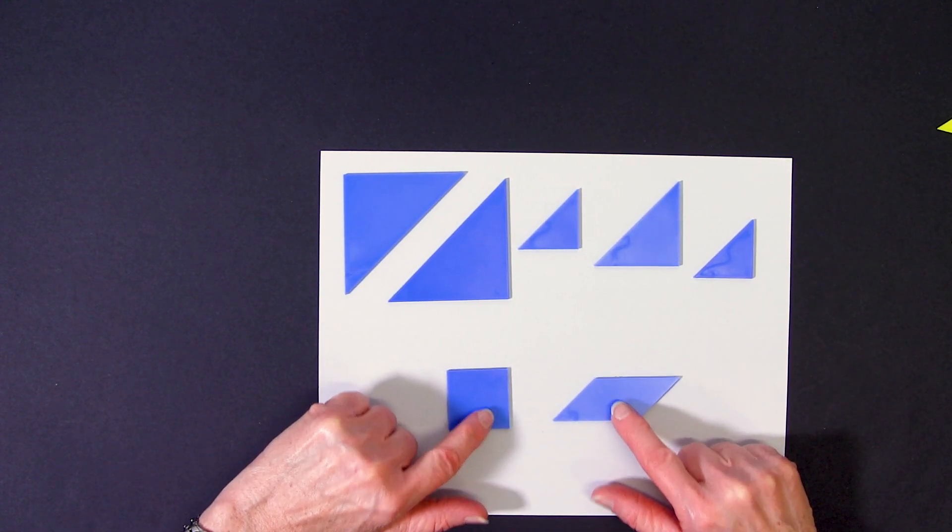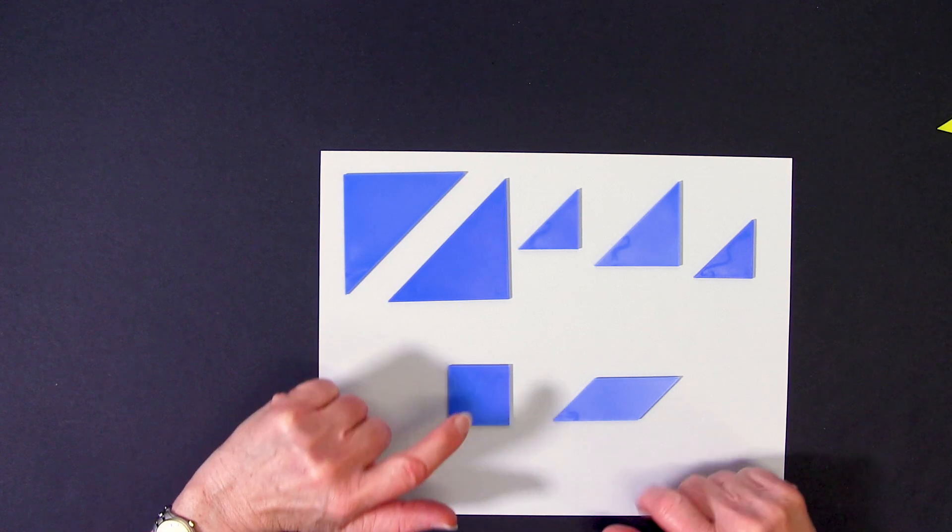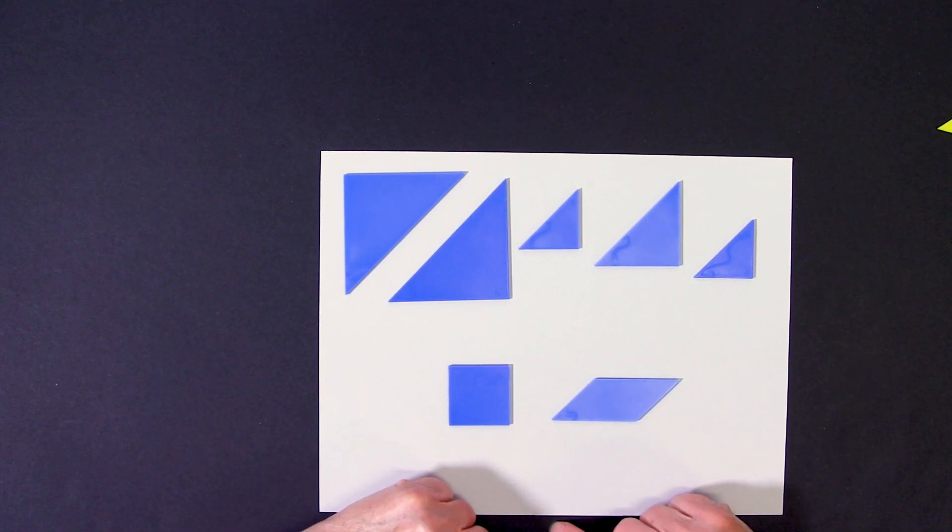We also have two quadrilaterals in this set. This is a square, and here we have a parallelogram.